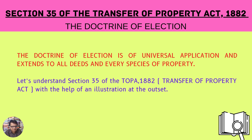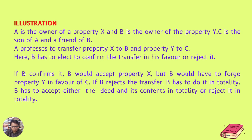The Doctrine of Election is of universal application and extends to all deeds and every species of property. Let's understand Section 35 of the Transfer of Property Act 1882 with the help of an illustration at the outset.